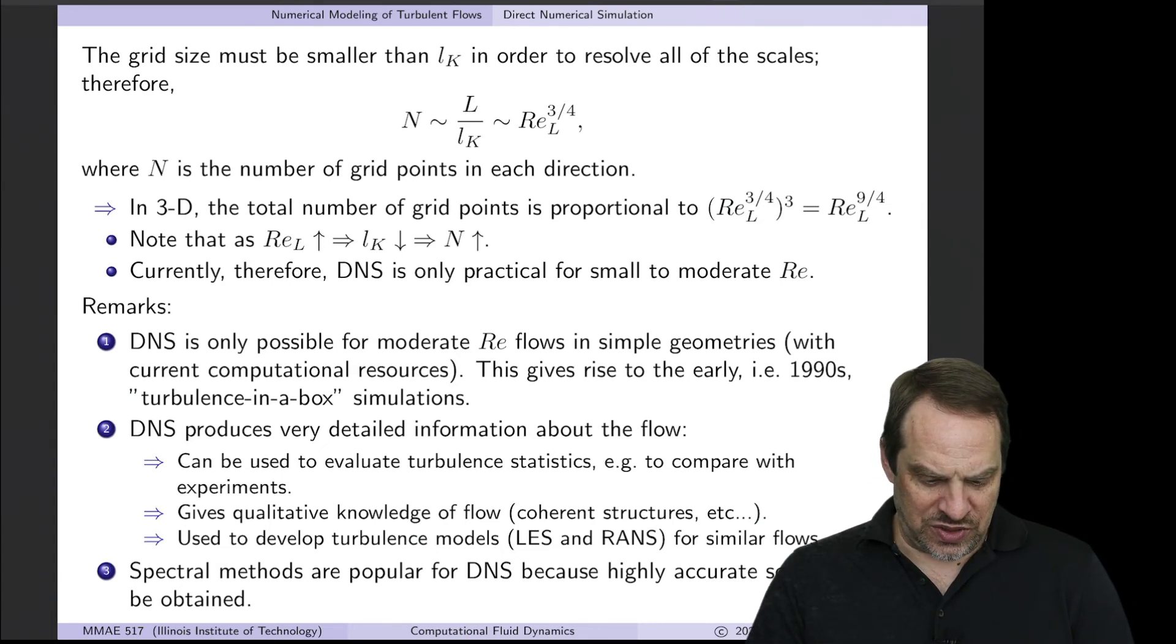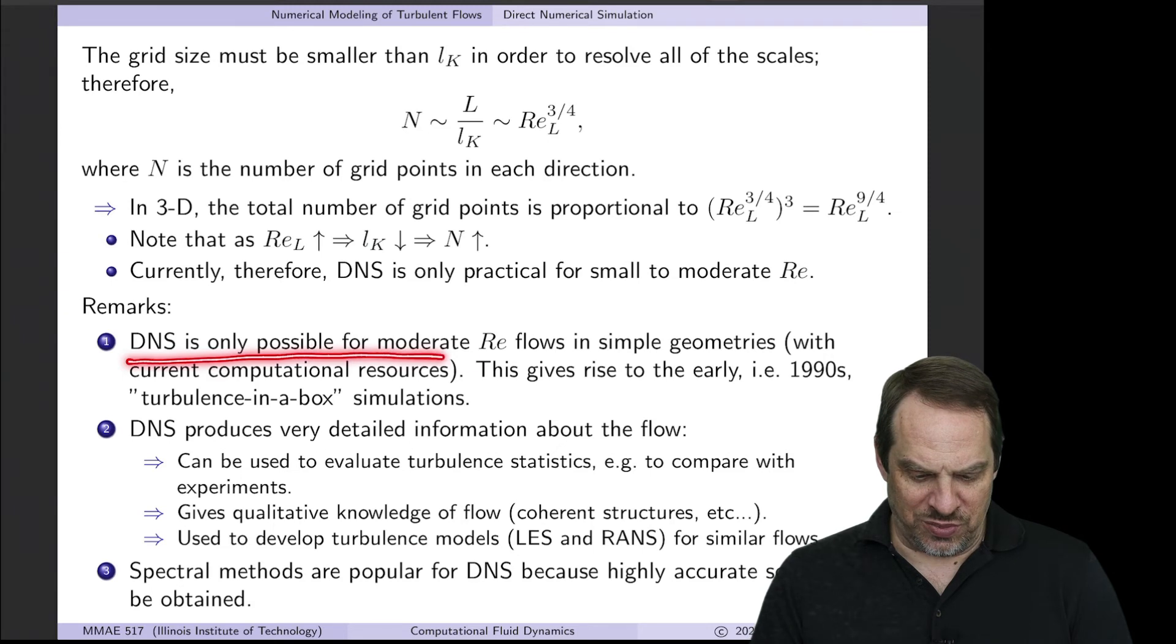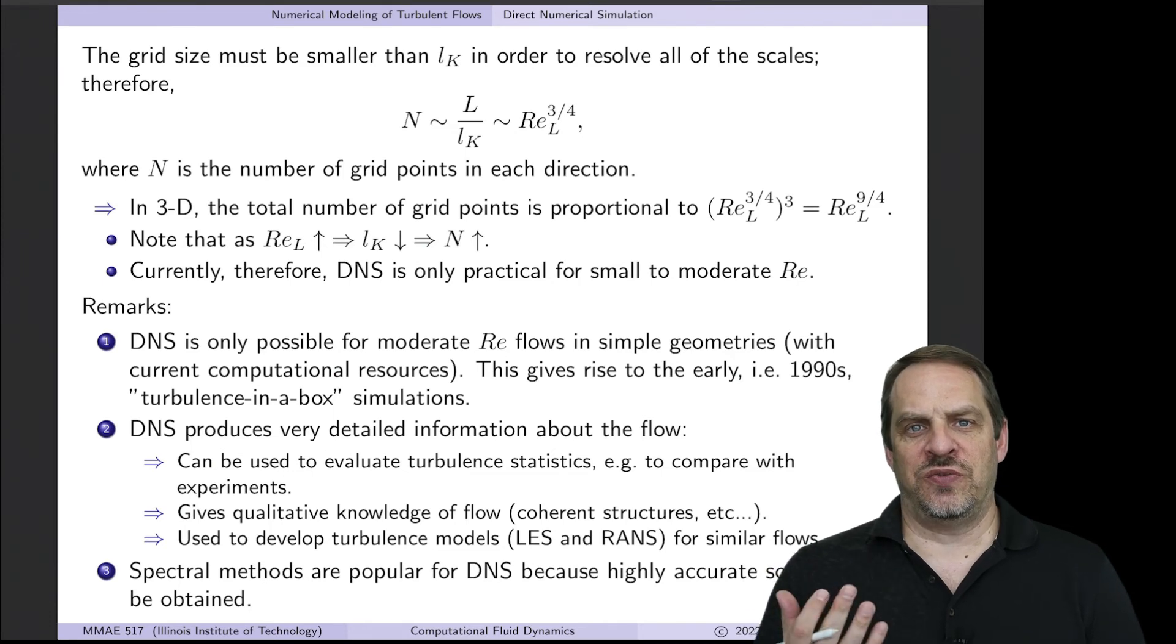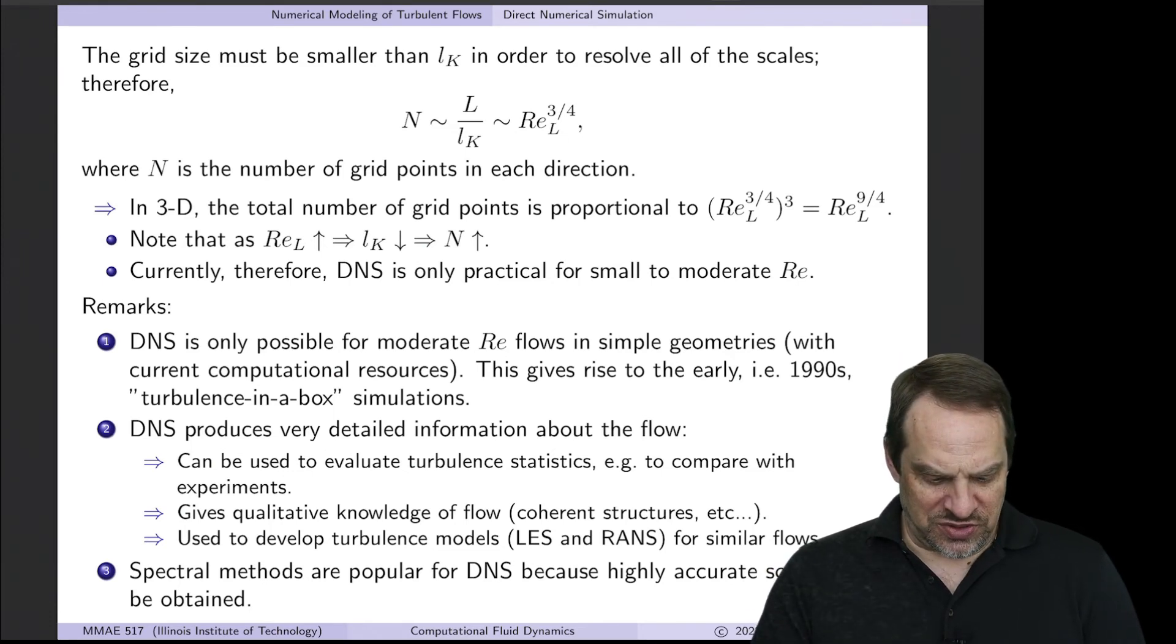Alright, so let's make some comments about this. Again, it's only possible for moderate Reynolds numbers in simple geometries. Back in the 1990s, when I was in grad school, we used to make fun of our DNS friends, because they were doing, basically, turbulence in a box.